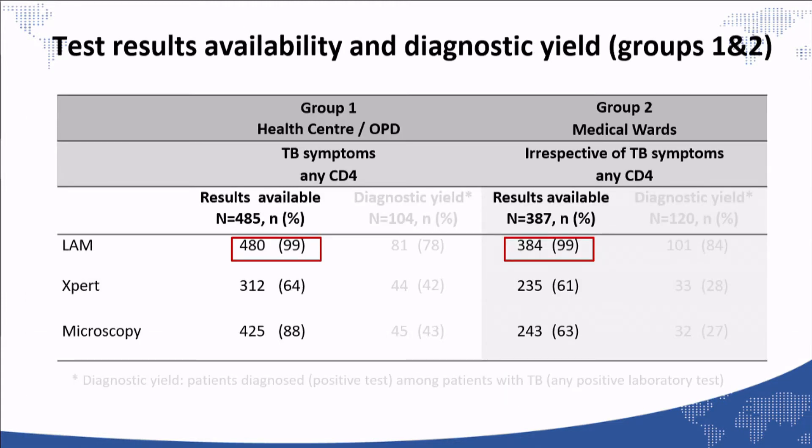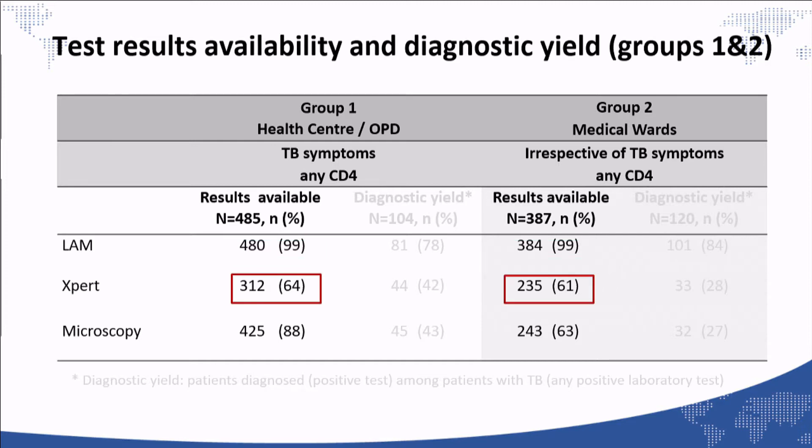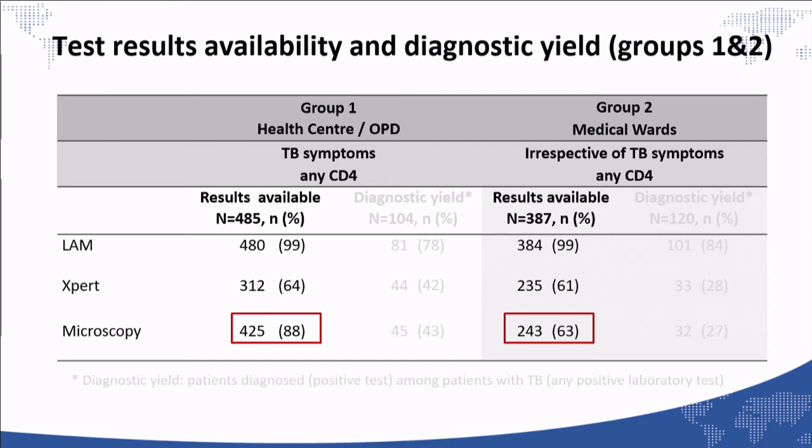This table shows the test results availability and diagnostic yield for groups one and two — patients who were sick with symptoms. Almost all patients, 99%, had a LAM result, because almost all could produce urine and the test was performed as a point of care with immediately available results. However, one third of patients did not have an Xpert result — not only because some could not produce sputum, but also due to programmatic reasons: no one available to collect sputum, and transportation challenges to get samples to the hospital where Xpert was performed. A similar situation existed for microscopy.